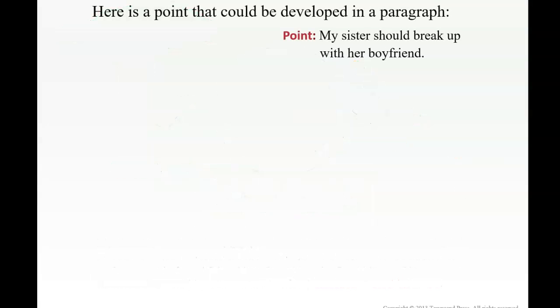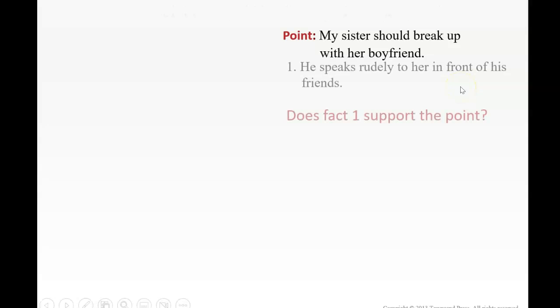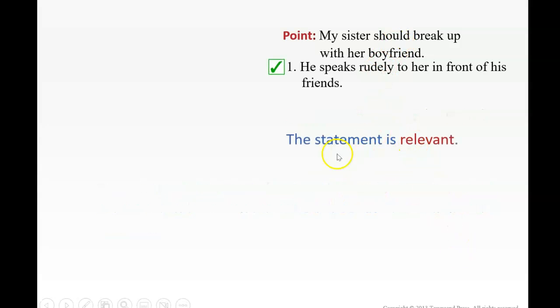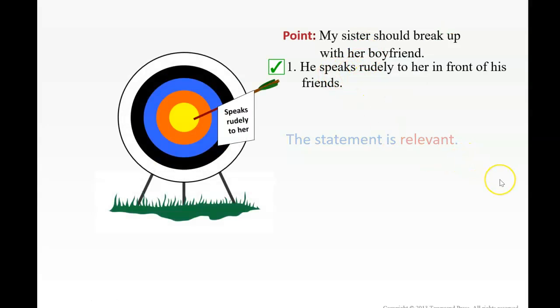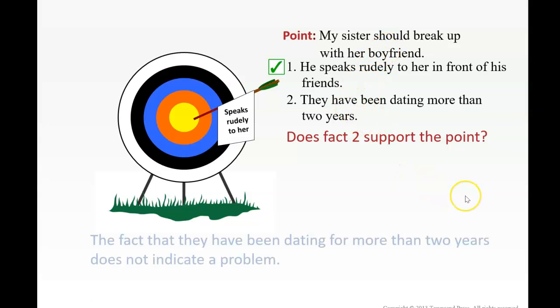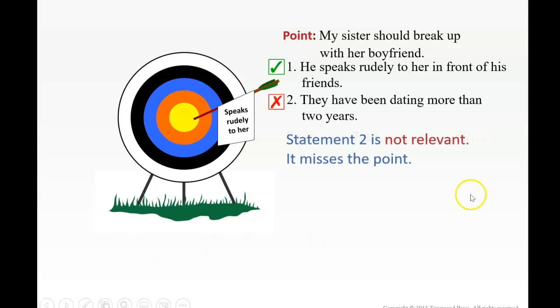All right, here's a point that could be developed in a paragraph. My sister should break up with her boyfriend. He speaks rudely to her in front of his friends. Speaking rudely to her friends, is that a reason she should break up with him? Yes, I think this is relevant. So this statement is relevant because it's talking about why she should break up with him. It's a good reason. Okay, they have been dating more than two years. Okay, what does it have to do with her breaking up? We need more information. To me, this is off topic, it's irrelevant, or they'll have to add more facts to it.